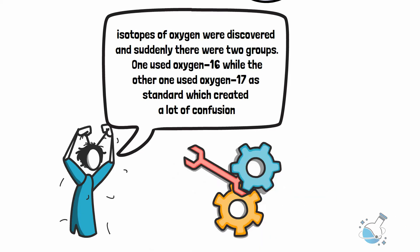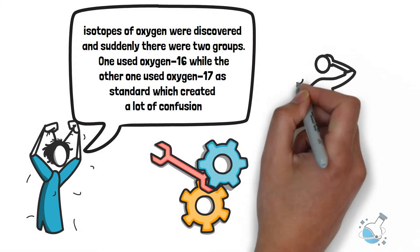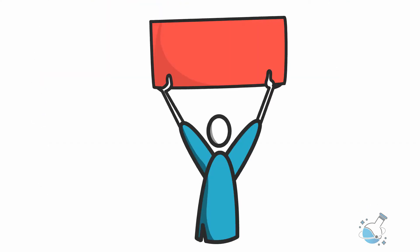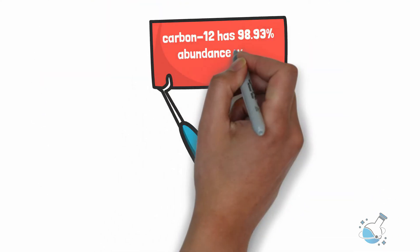Finally, carbon-12 emerged as the solution. Although carbon has three isotopes, carbon-12 has 98.93% abundance, which helped it win the vote.